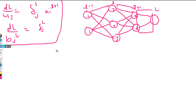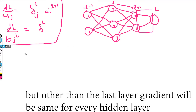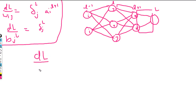What we need to find is dL/dw_ij for the lth layer. We are finding the weight matrix of the lth layer, going from neuron i to neuron j. This is what we are finding out.